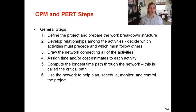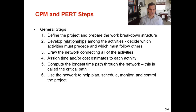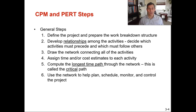Step three is to draw the network connecting all the activities. We'll go over an AON network diagram, but you want to visually see how those steps are all interlinked. Step four is to assign time or cost estimates to each activity — when you're doing this in your career you'll need to gather those estimates; in this class they will be given to you.